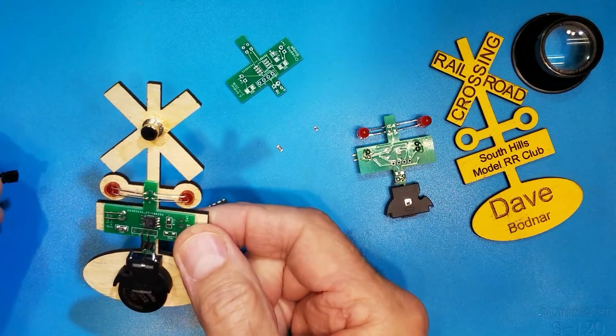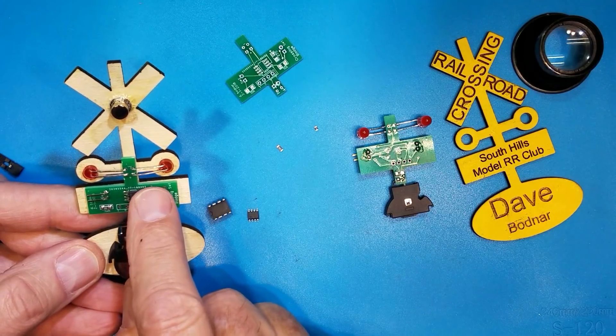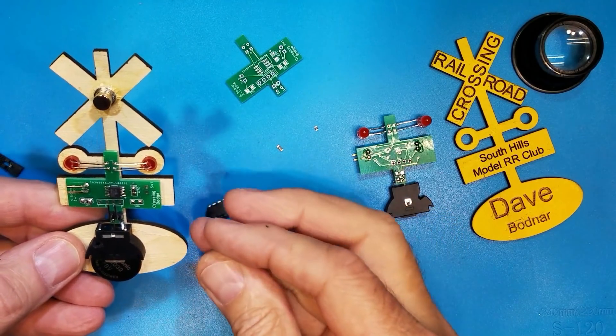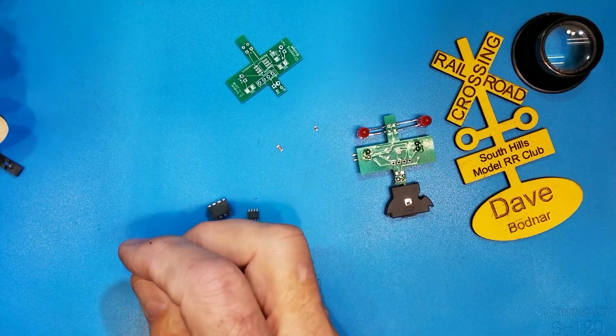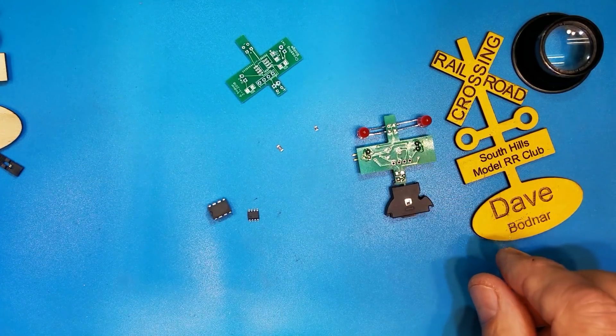If you take a close look, you'll see that the components are rather small. These are surface mount components and I'd like to take a few minutes to show you some tricks that I've picked up over the years that make it easier to work with surface mount components.